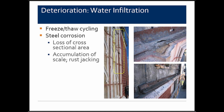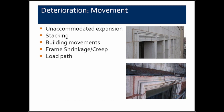Deterioration due to water: similar to brick, terracotta experiences freeze-thaw because it is a clay material. Because it's supported by steel, you can have corrosion of that steel and get loss of section as shown in photographs, or stretching of the terracotta units due to accumulation of rust scale. For unaccommodated expansion — not having expansion joints — terracotta wants to grow just like brick does. Stacking effects can occur if units are not supported by shelf angles, and the sheer weight of stacked units can cause distress.